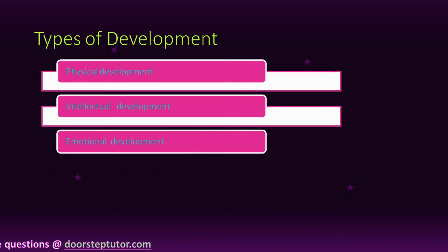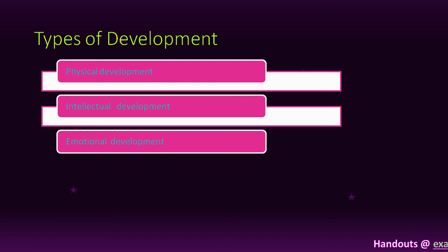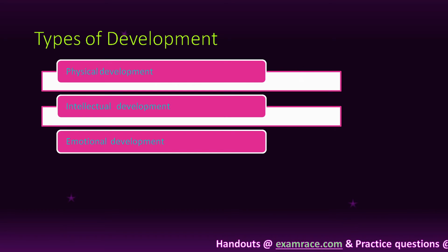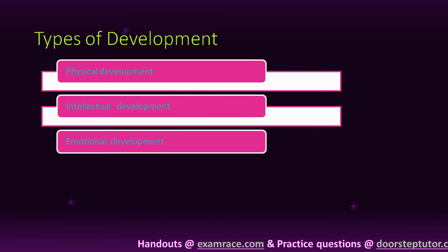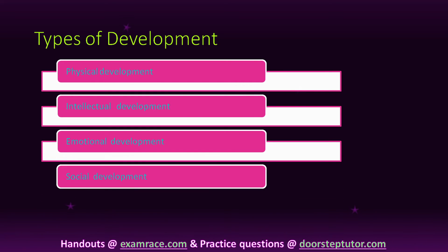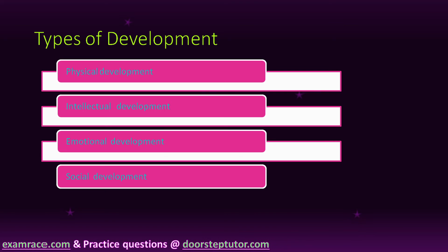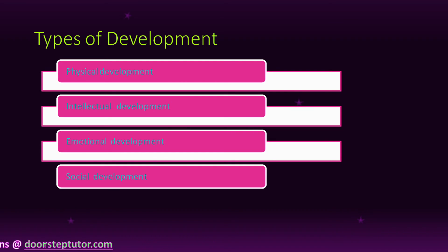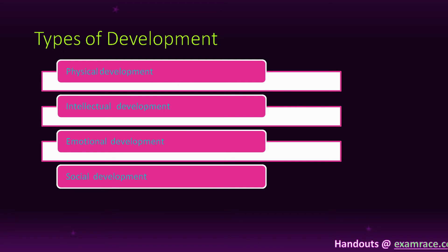Emotional development is the development of feelings — in every step of life we develop our feelings. This is emotional development. Social development is about interaction within society. We need to live in society, so we need to know how to interact with people. If we don't know how to interact, we are not able to live in society.